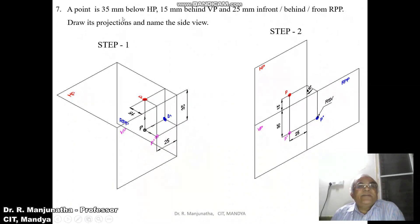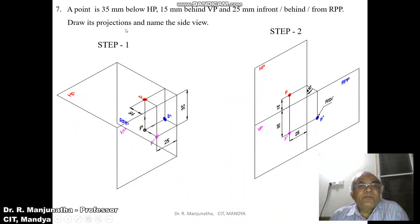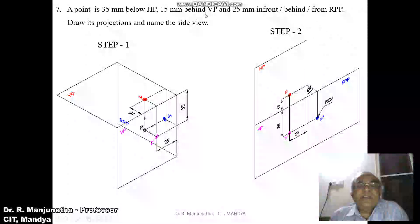A point is 35mm below HP, 15mm behind VP, and 25mm from RPP. Draw its projections and name the side view.